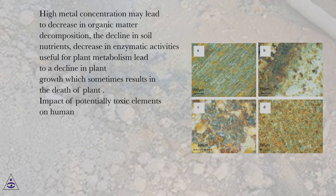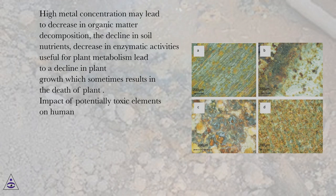High metal concentration may lead to a decrease in organic matter decomposition, the decline in soil nutrients, and decrease in enzymatic activities useful for plant metabolism, leading to a decline in plant growth which sometimes results in the death of the plant.